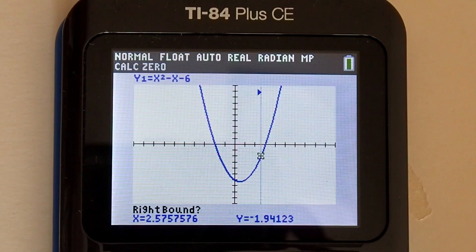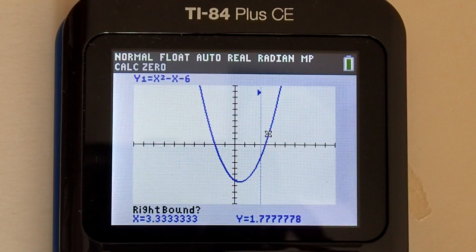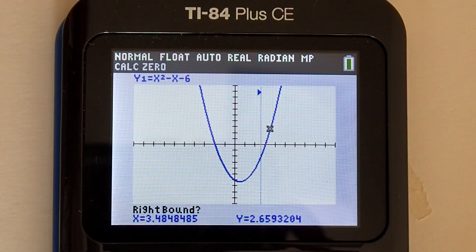Now the calculator is asking for the right bound. Move the right arrow key until the cursor is just to the right of x equals 3. Right there is good. Press enter.